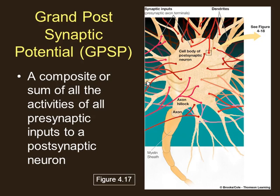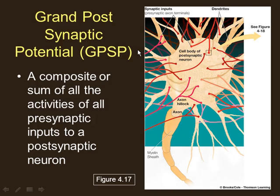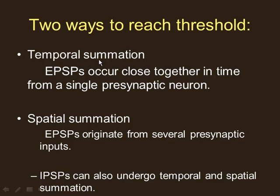We've talked about excitatory and inhibitory post-synaptic potentials and receptors. Now we look at the big picture for the postsynaptic neuron — the grand postsynaptic potential. If you take all the excitatory and inhibitory inputs together, whatever wins determines what happens to the postsynaptic neuron. A grand postsynaptic potential is a summing of all the potentials. We can sum them two ways: temporally over time, or spatially by looking at all neurons in the space around a neuron.